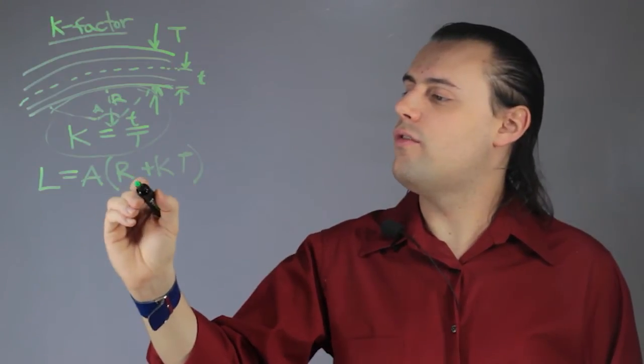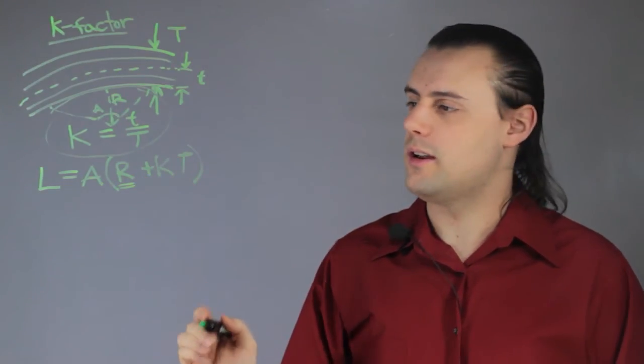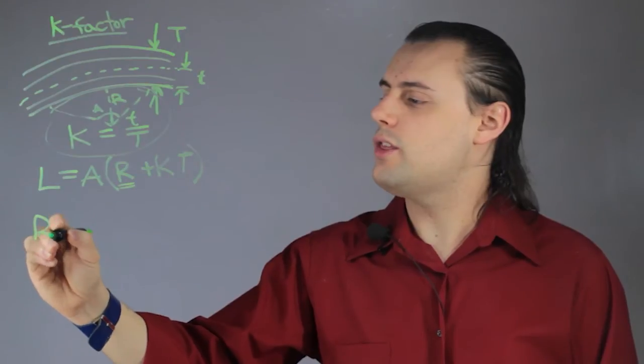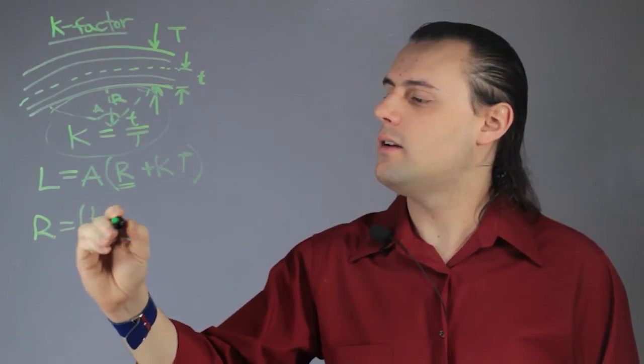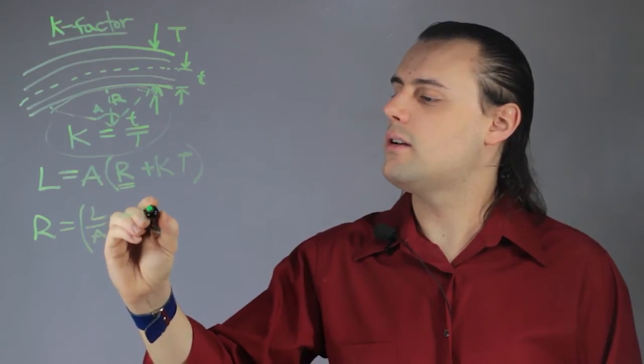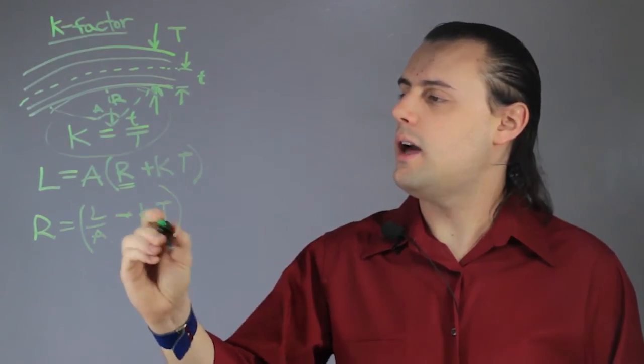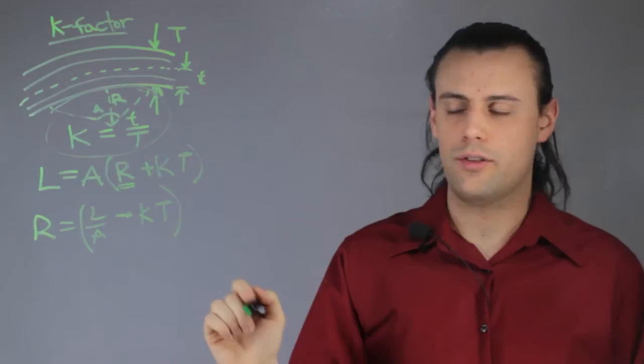Now, if we solve for R, which is what we're interested in, we end up with R equals L over A minus k times T. And if we substitute in our definition for the k-factor,